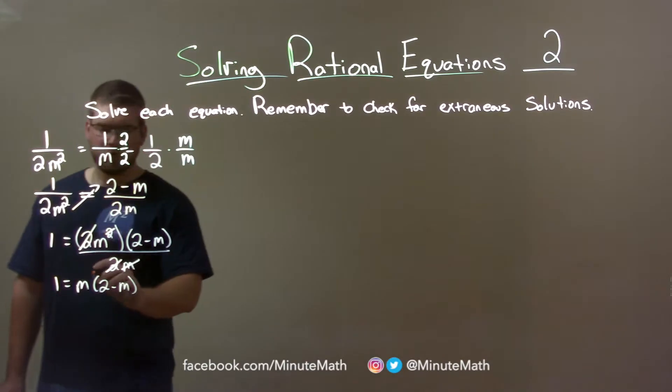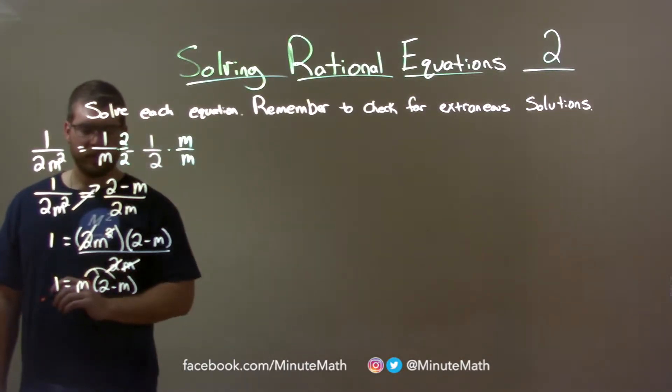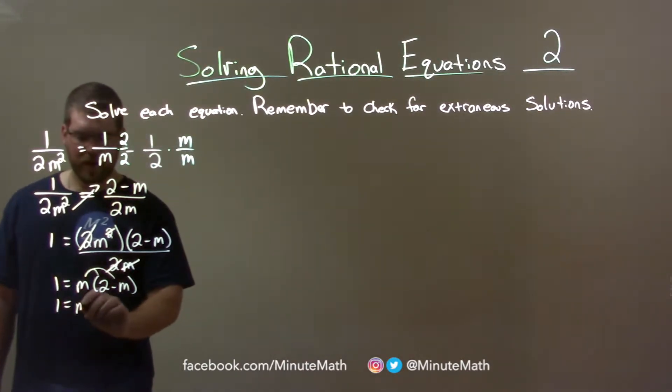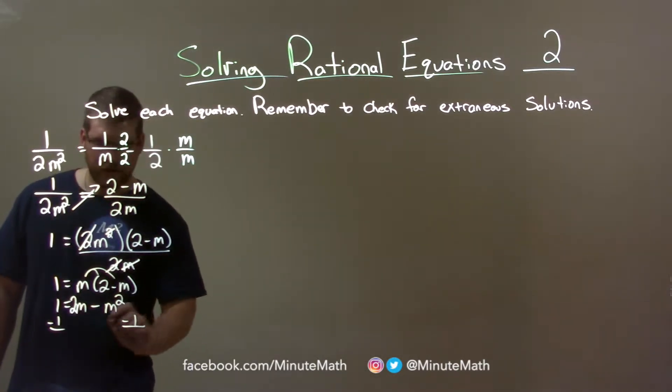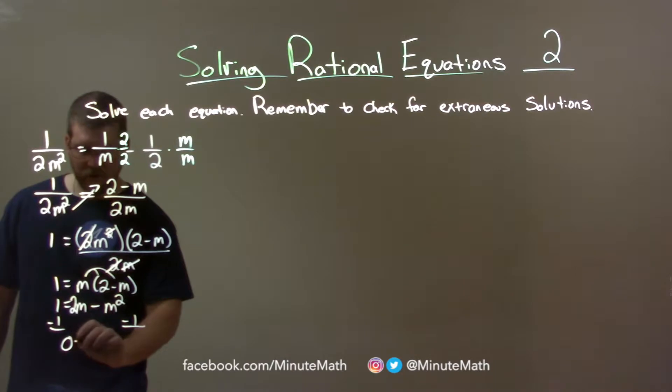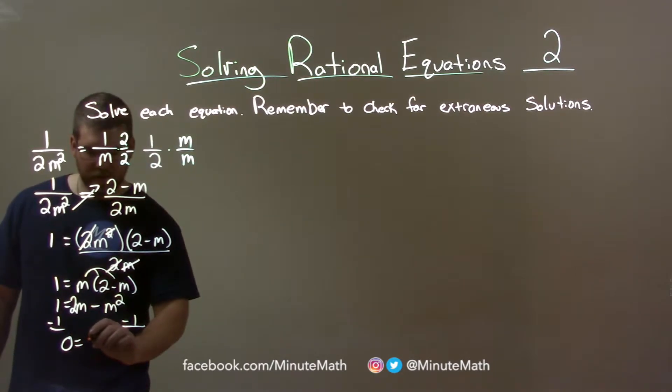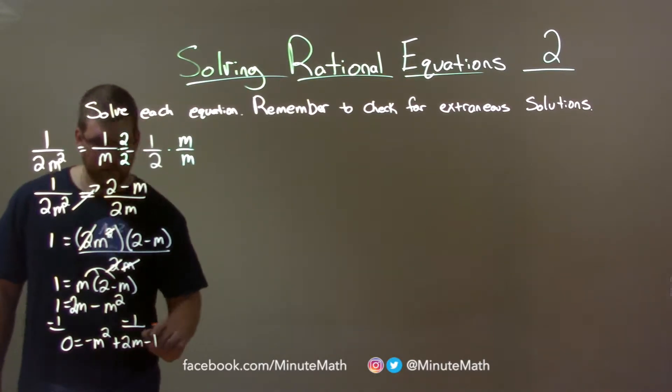Let's go distribute this m across like so. Now we have 1 equals 2m and minus m squared. If we subtract a 1 to both sides and rearrange, we have 0 equals negative m squared plus 2m minus 1.